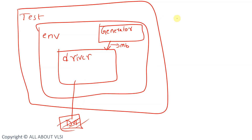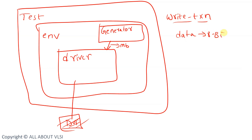Now, let's say in this particular example there is one packet — let's say it has a write transaction — and this packet has a field which is known as 'data' which is of 8 bits. Basically this driver is using this particular packet which is being generated by the generator.